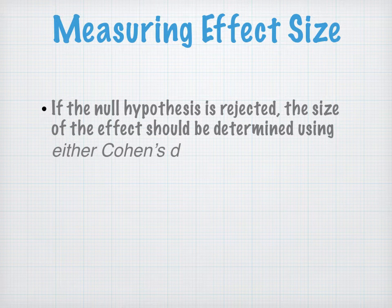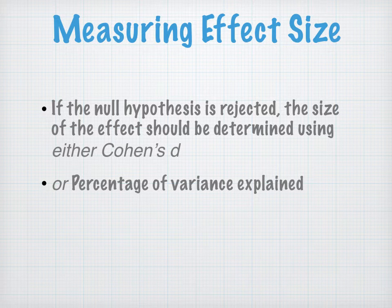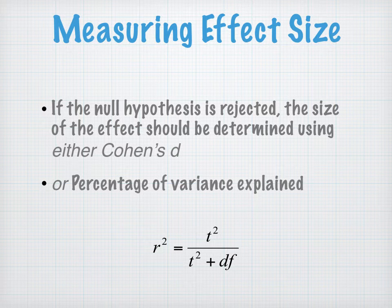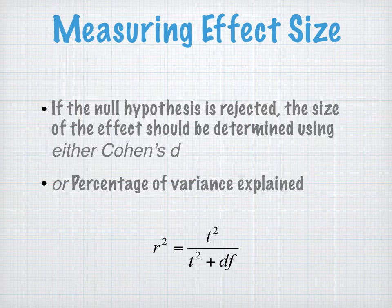We can either use Cohen's D or R-squared as a measure of effect size when we reject the null. R-squared is the percentage of the variance explained — it's essentially the same thing, just looking at it from a different perspective. The formula for R-squared is: take your T value, square it, and divide it by your T value squared plus the degrees of freedom. For our earlier example, that would be 9 divided by 3 plus 18, giving us 3 divided by 21. That decimal translates to the percent of the variance explained by the effect.